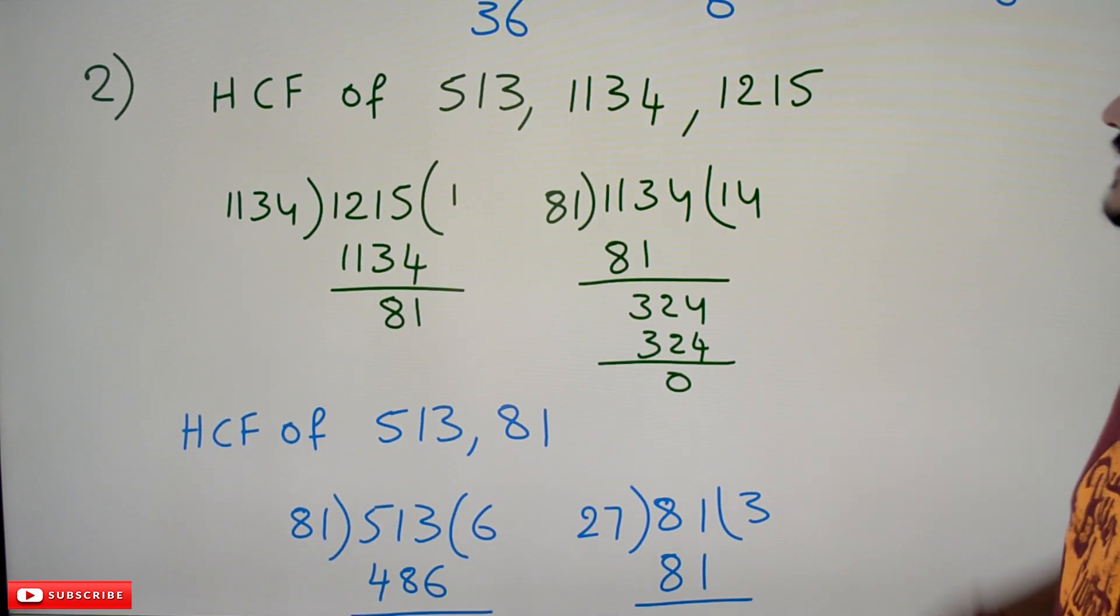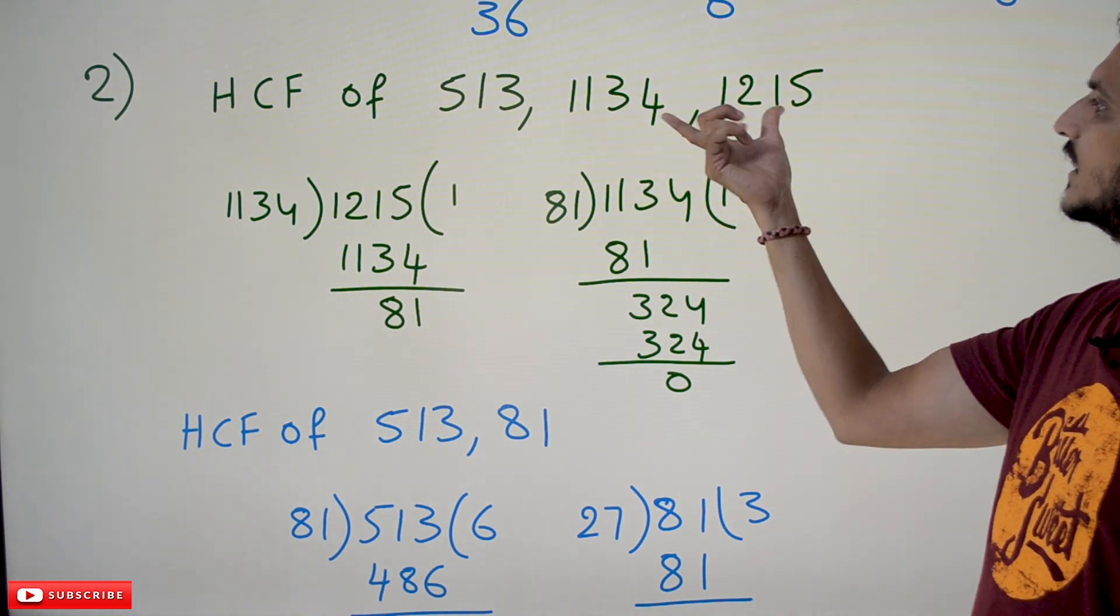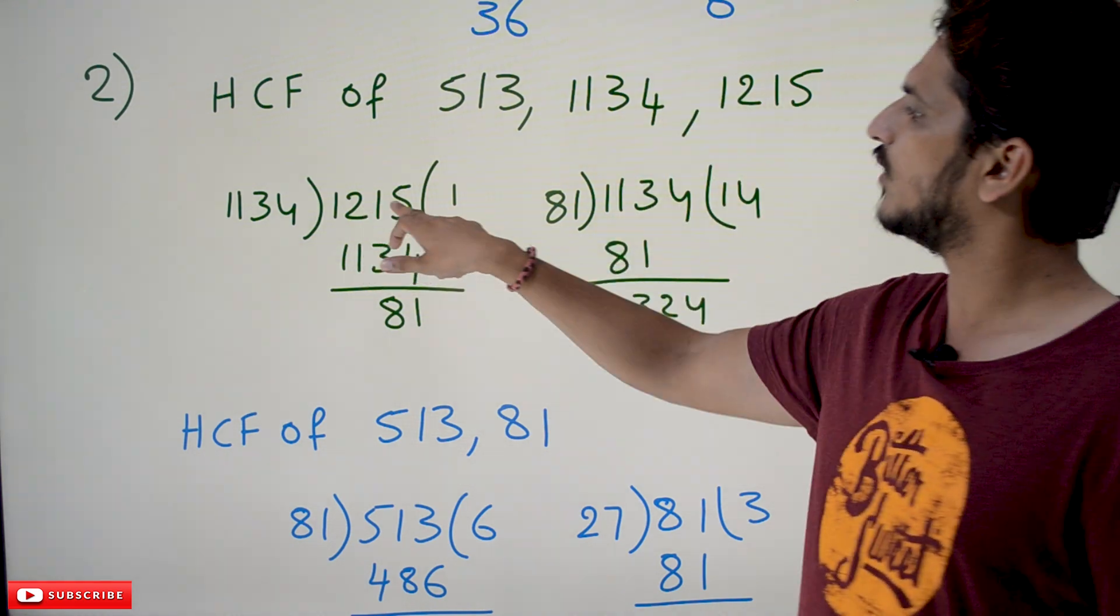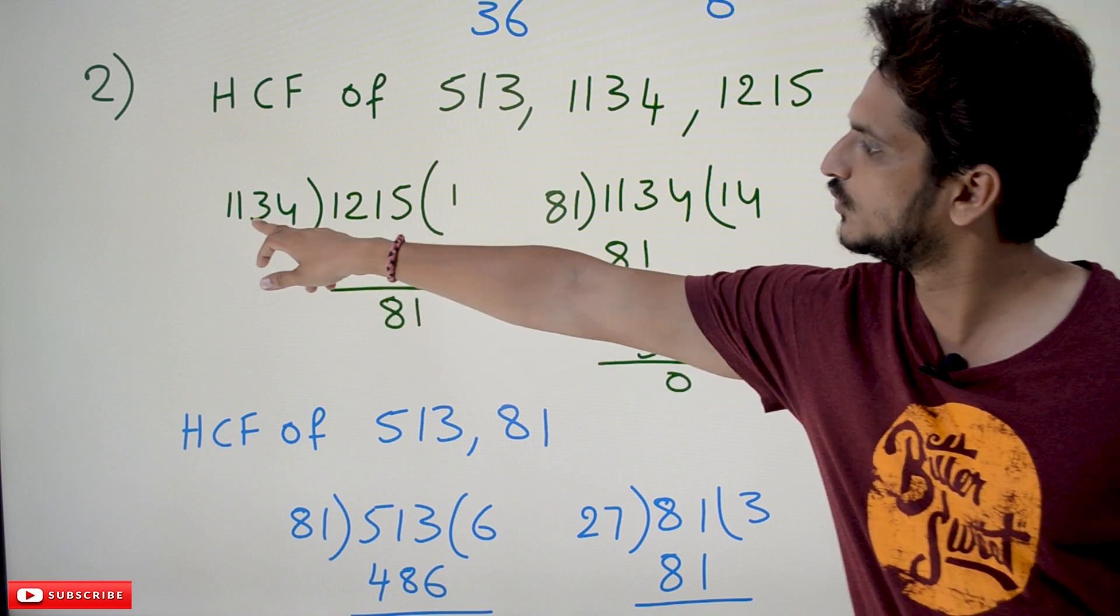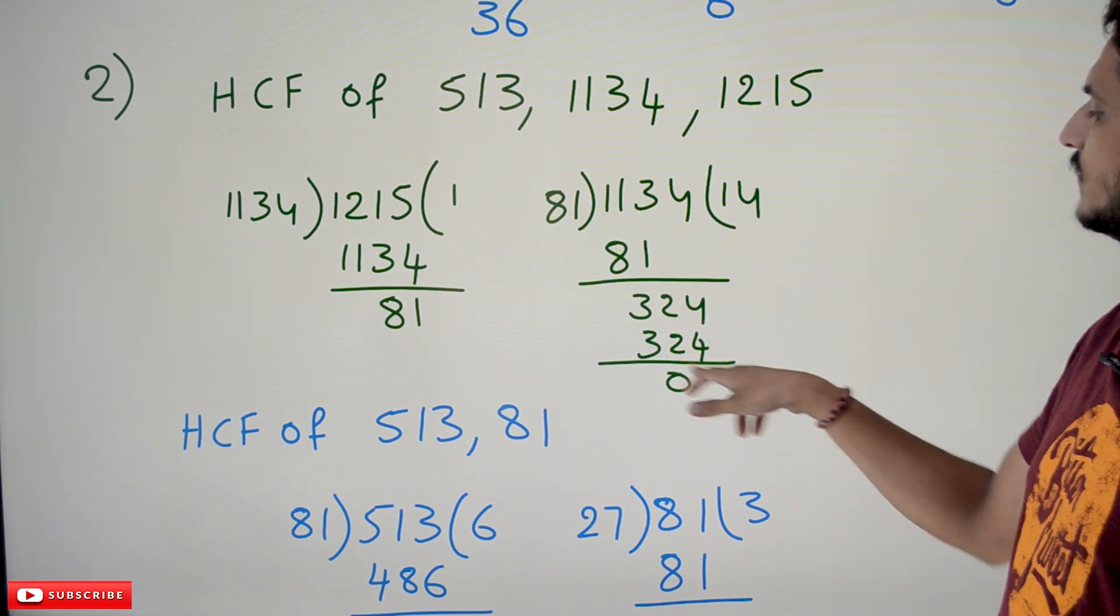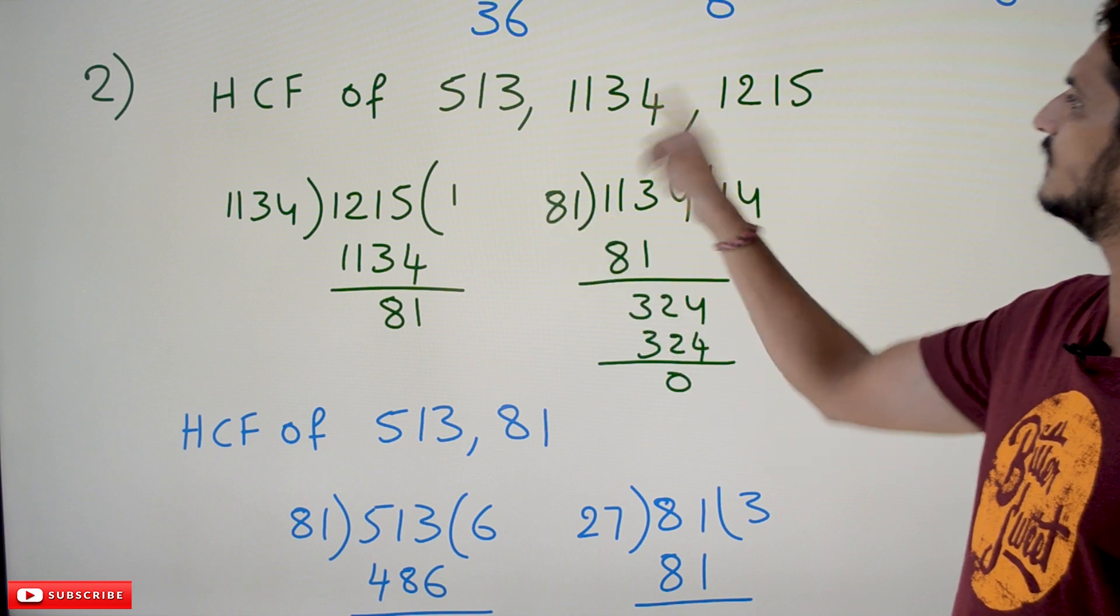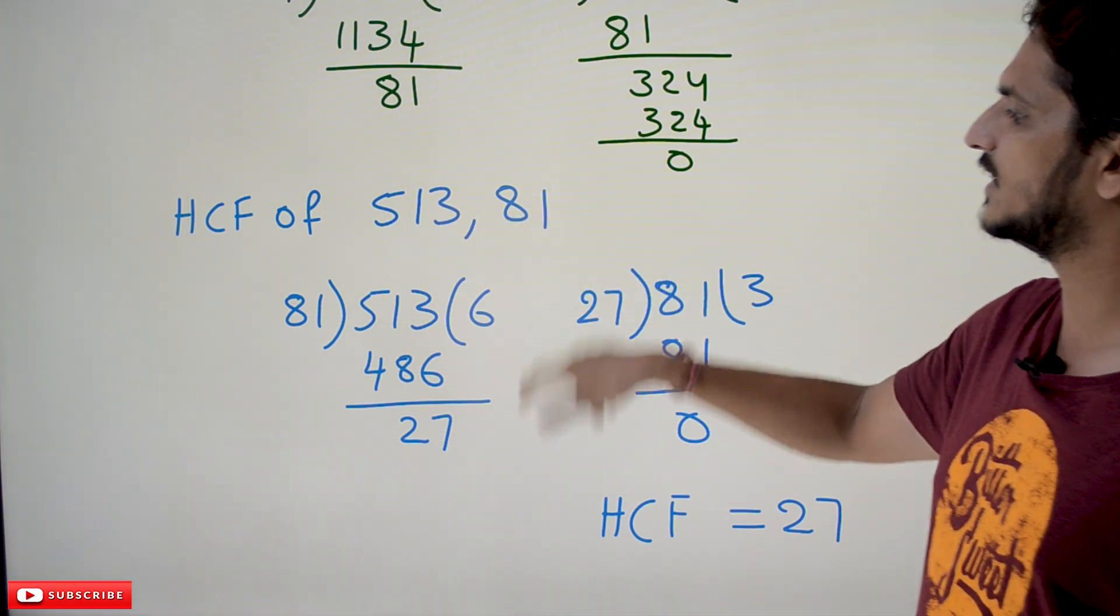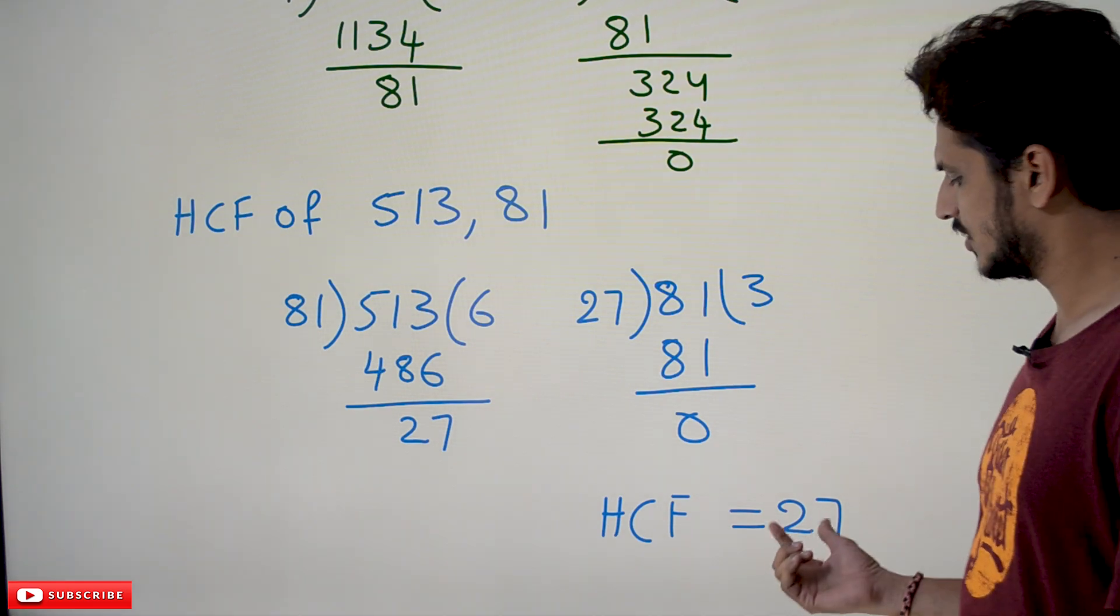Similarly, we do one more example for better practice. HCF of 513, 1134, 1215. We're taking these two numbers first - we identify the GCD for these two numbers. 1215 divided by 1134, the remainder is 81. Then 1134 divided by 81, which is 14 times 81, remainder 0. So the GCD of these two numbers is 81. Again repeat the process: HCF of 513 and 81 gives us 27. So finally, the GCD of the three numbers is 27.